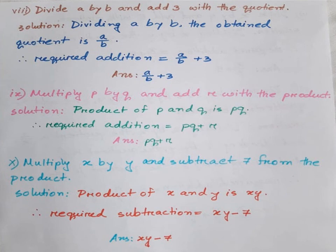Number 8: Divide A by B and add 3 with the quotient. Solution: Dividing A by B, the obtained quotient is A divided by B. Therefore, the required addition is A divided by B plus 3. Answer: A/B plus 3.